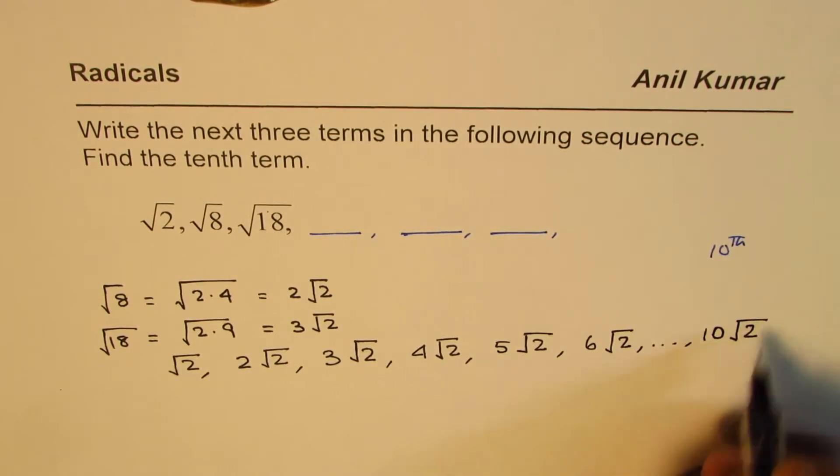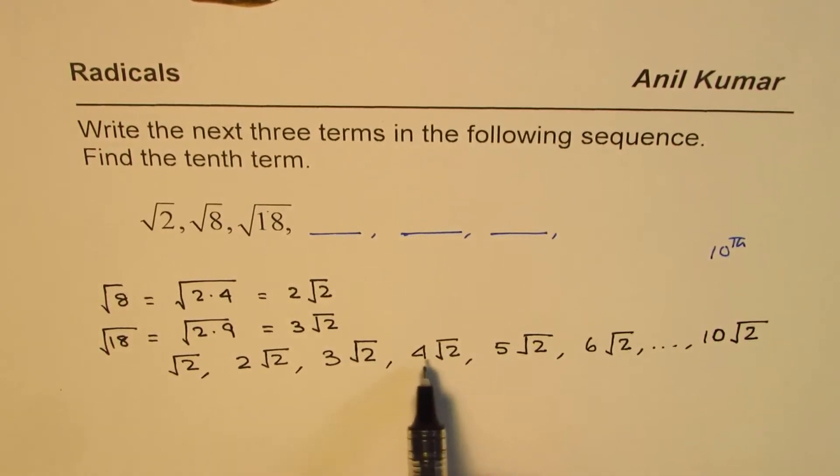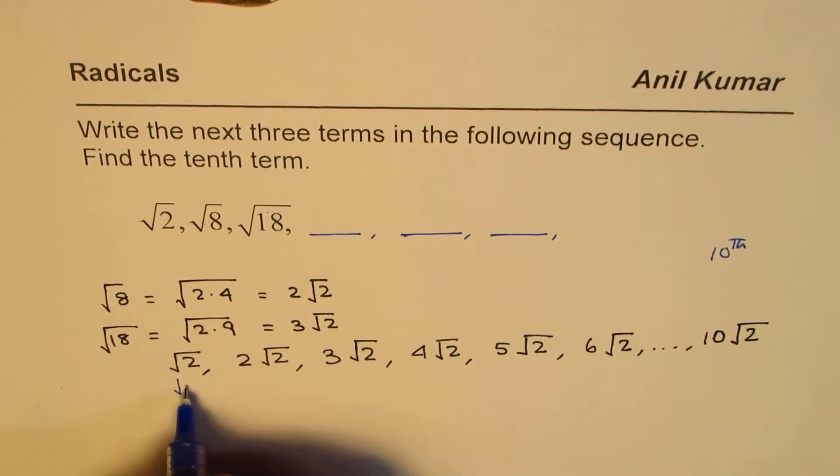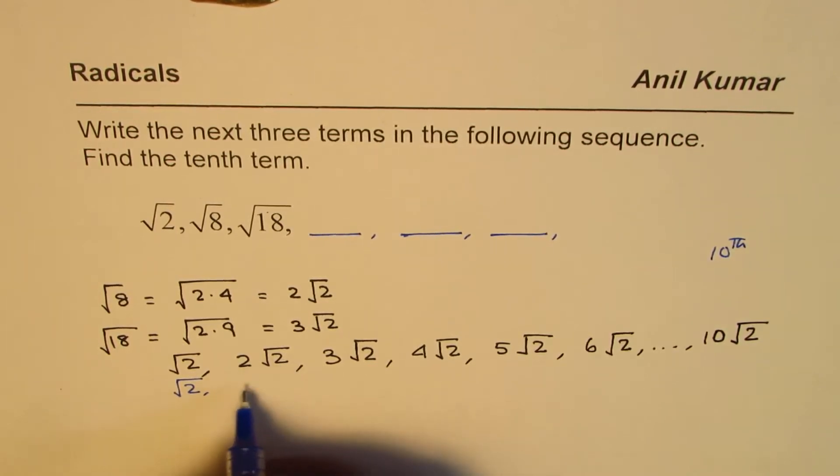Now it is very important to write this in the form which is given to us. Therefore, I'll rewrite the sequence as square root of 2, and that 2 goes inside to make it 4 times 2 is 8.